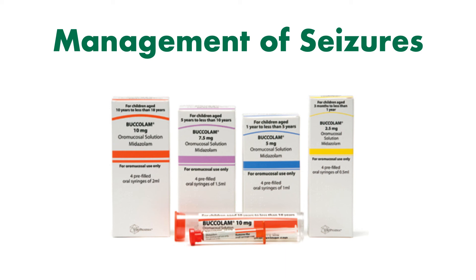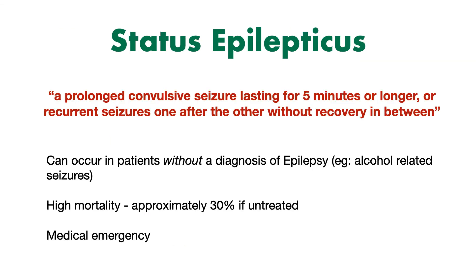At the beginning of this presentation, we mentioned that status epilepticus was a complication of epilepsy or seizures. We can define status epilepticus as a prolonged convulsive seizure lasting for five minutes or longer, or where a patient has recurrent seizures one after the other without recovery in between. This definition has changed slightly — there's a move now to think about status epilepticus with a five-minute time limit, whereas older definitions referred to a 30-minute time limit. An important point is that patients can develop status epilepticus without a diagnosis of epilepsy — a very common cause is alcohol-related seizures due to alcohol withdrawal. So you don't need a diagnosis of epilepsy to have status epilepticus.